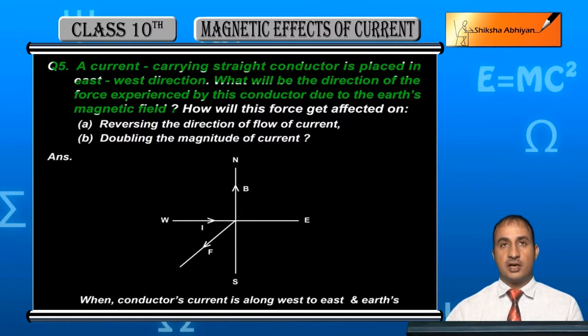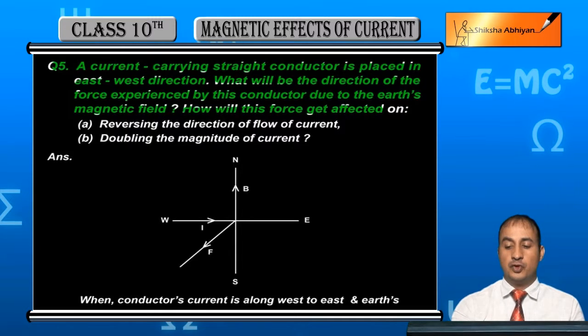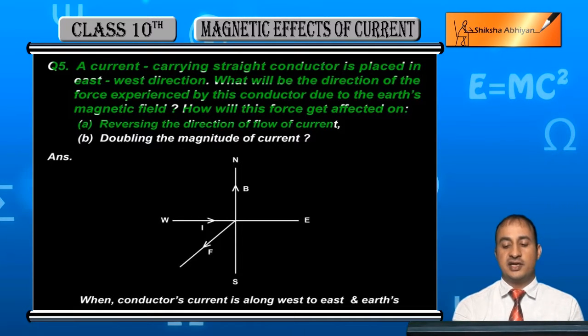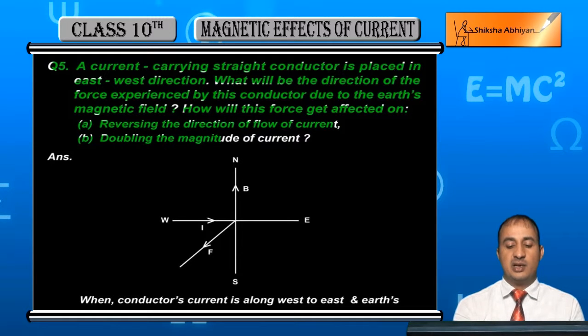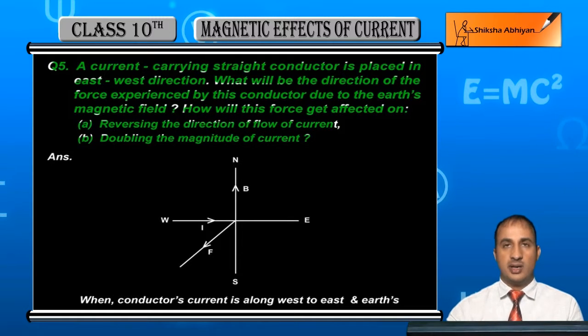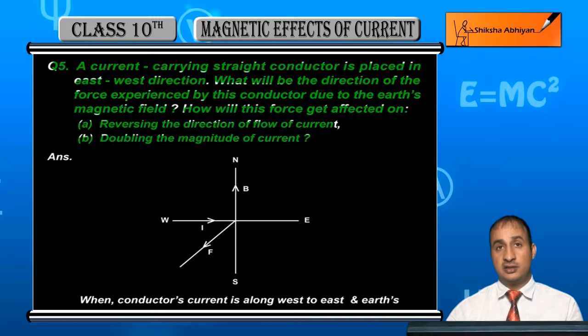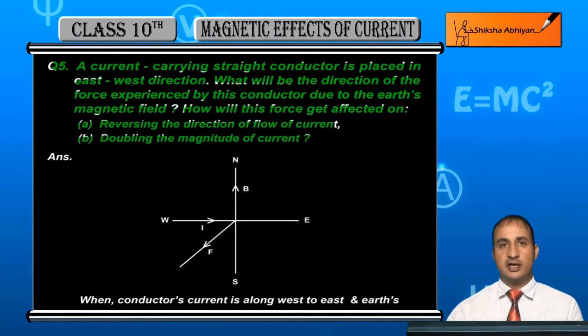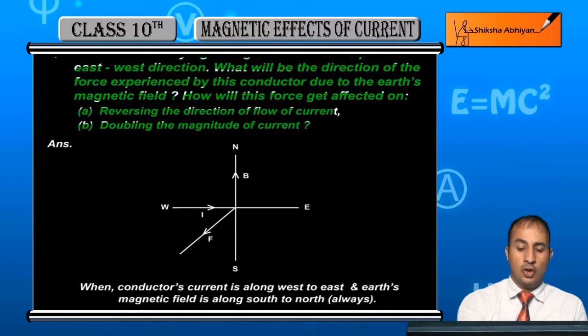How will this force get affected by: (a) reversing the direction of flow of current, and (b) doubling the magnitude of current? What difference will it make to the force if we increase the current magnitude?